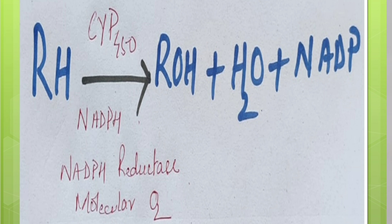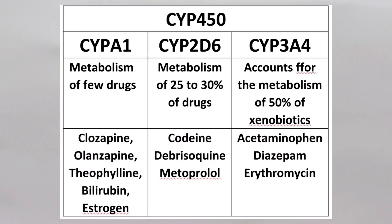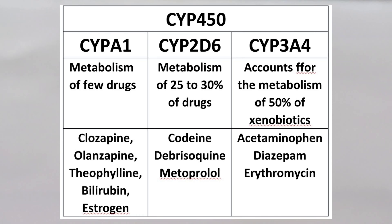Cytochrome P3A4 is one of the most important enzyme systems and accounts for the metabolism of 50% of the xenobiotics. Drugs which are metabolized by cytochrome P3A4 are acetaminophen, codeine, diazepam, cyclosporine, erythromycin and so on.